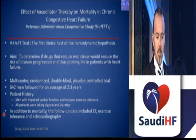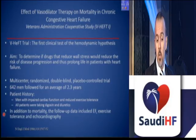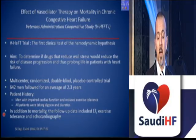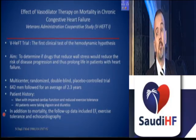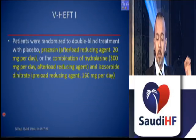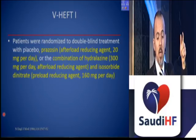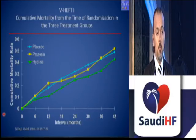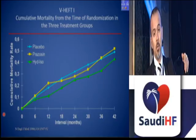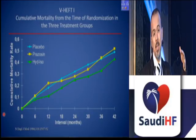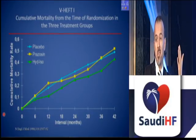The hemodynamic model was tested. The V-HeFT study was the first clinical test of the hemodynamic hypothesis — a multicenter, randomized, double-blind, placebo-controlled trial with a considerable number of HFrEF patients. Patients were randomized to placebo, prazosin — mainly an afterload-reducing agent — or the combination of hydralazine plus isosorbide dinitrate. The result showed hydralazine combined with isosorbide dinitrate was the best option, while prazosin was equal to placebo and actually worse in some cases.